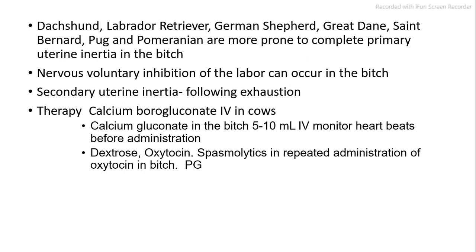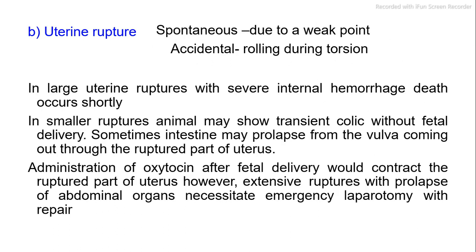Therapy: calcium borogluconate 4% in cows; calcium gluconate in the bitch 5–10 ml, monitoring heartbeats before administration. Also dextrose and oxytocin. Spasmolytics are used in repeated administration of oxytocin in the bitch. PGF-2α may also be used.